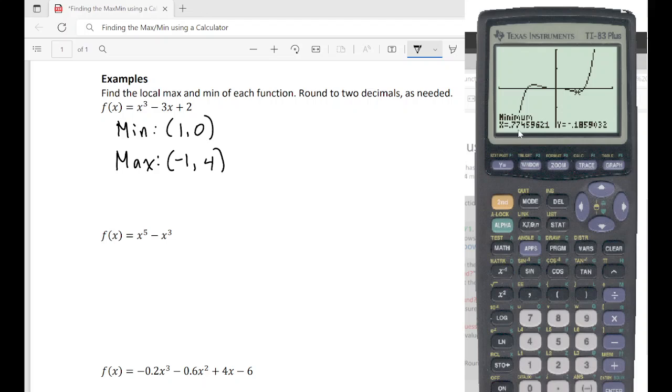And it thinks about it. And here we have some decimals which is okay. We see that it's x is point seventy seven and y is negative point eighteen. But because that five we're going to make this negative point nineteen. So our min here is going to be point seventy seven and negative point nineteen.